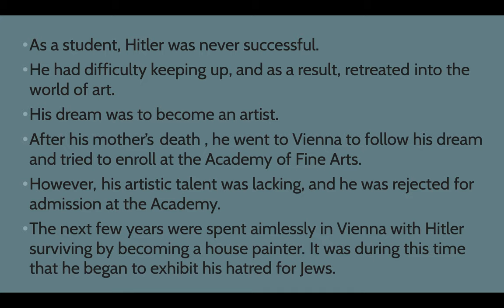After being rejected from the Academy, he was feeling this rejection. He had found success in the army during World War One — he was actually in the German army and was really good at it. So he had two things he was really good at and enjoyed — art and military — and he had basically failed at both. The next few years were spent roaming around Vienna and Austria. He had some artistic ability, so he became a house painter. During this time, doing little jobs here and there and talking to people, he started to publicly exhibit this hatred for Jewish people.